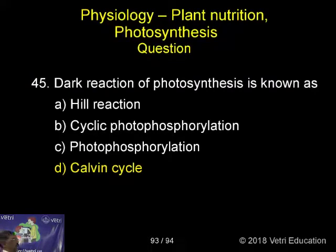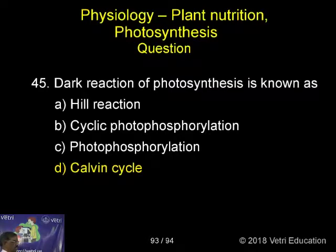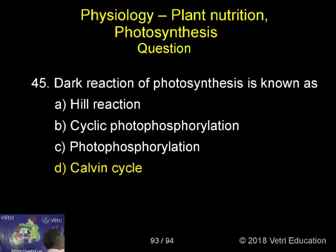The dark reaction of photosynthesis is known as: Hill Reaction, Cyclic Photophosphorylation, Photophosphorylation, or Calvin Cycle. The correct answer is D — Calvin Cycle.